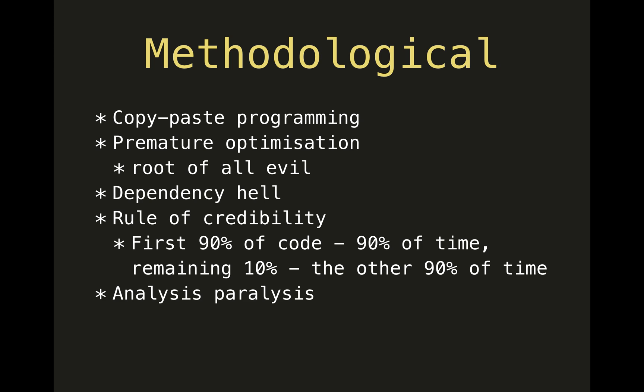Analysis paralysis is the other way around — when you're afraid of making the mistake of the rule of credibility and afraid to make a decision on whether to optimize something or not. You're stuck in the planning phase: collecting requirements, analyzing them, discussing everything, and basically nothing gets produced.